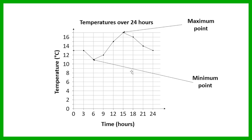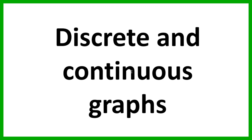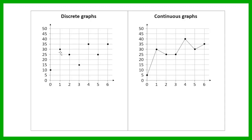You also get two different kinds of data: discrete data and continuous data. When we draw graphs for discrete data and continuous data, they look a little bit different. In a discrete graph, the points are not joined, whereas in a continuous graph, the points are joined — they can be joined by straight lines or by a curve, but they are joined.